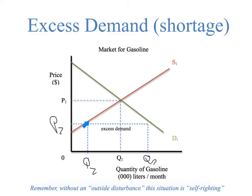So what's going to happen? Suppliers are going to have to start raising the price. And as they raise the price, all of these producers will get back into the marketplace. As producers start raising the price to get rid of the excess demand, all of these producers are welcomed back into the marketplace, and the demanders right here by the black dots are going to get cut out. The situation will return to P1, Q1, which was the original equilibrium price — self-righting without an outside disturbance. The market will shift itself back to the equilibrium price-quantity combination of P1, Q1, thus eliminating the shortage.